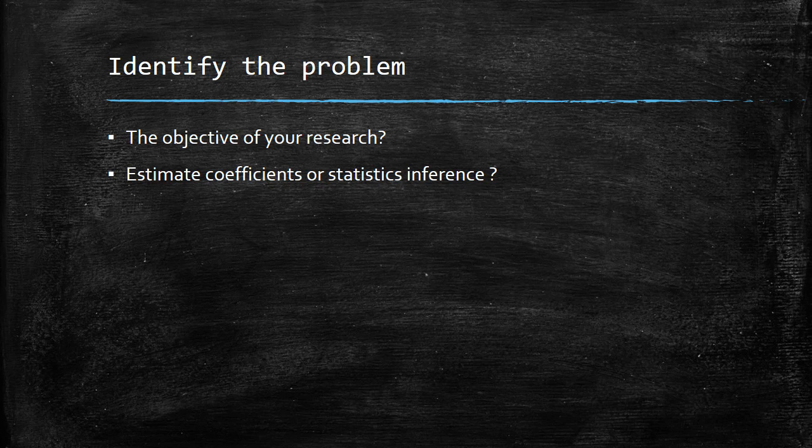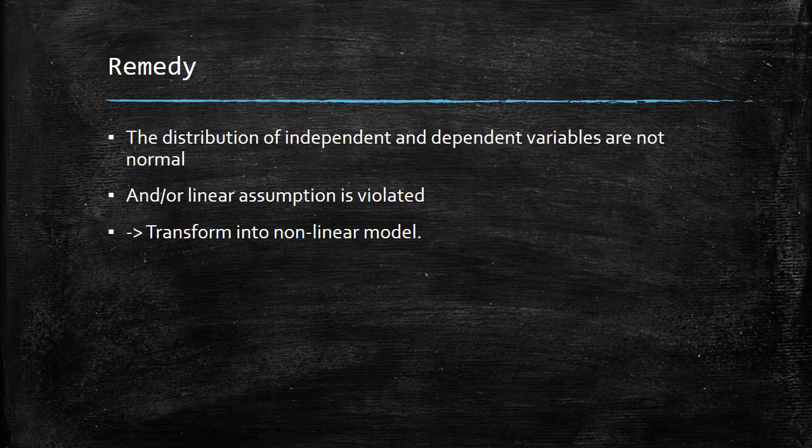In addition, the cause may come from the outlier effect. The assumption of normality is violated because the distribution of independent and dependent variables are not normal, and/or the linear assumption is violated. In this case, you should transform linear models into non-linear models.